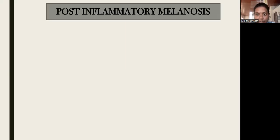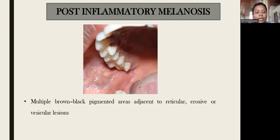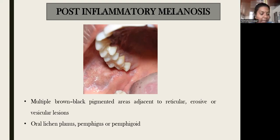Next is post-inflammatory melanocytosis. As the name suggests, this pigmentation occurs after any inflammatory reaction. In oral mucosa, the most common inflammatory reaction is an allergic reaction, that is, lichen planus. Post-inflammatory pigmentation is mostly related to lichen planus. There are multiple brownish-black pigmented areas adjacent to vesicular or erosive lesions as in oral lichen planus, and also it is seen in lupus or lupus-like conditions.